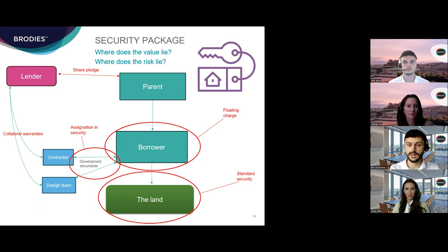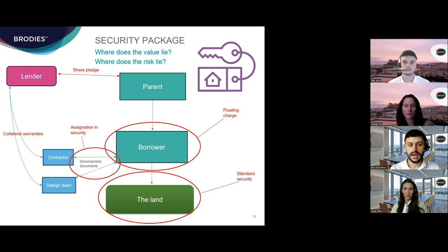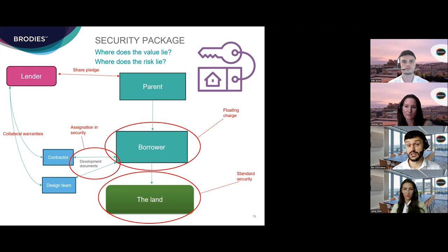Another form of security which gives the lender optionality on enforcement is a security granted by the parent over the shares in the borrower itself. In Scotland, fixed share security is taken in the form of a document called a share pledge. Perfection of a share pledge requires the shares to be legally transferred to the lender and for the lender to be recorded as the shareholder in the company's register of members. The key point is that a share pledge gives the lender the option of taking control of and selling the borrower itself, with certain advantages including avoidance of LBTT.